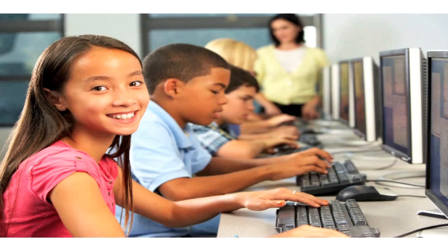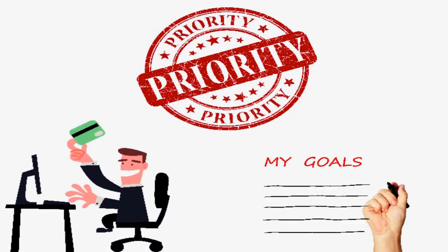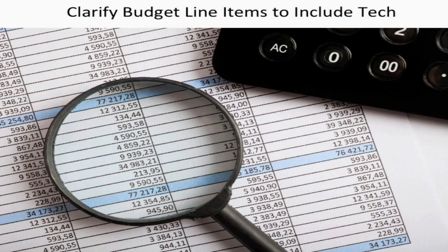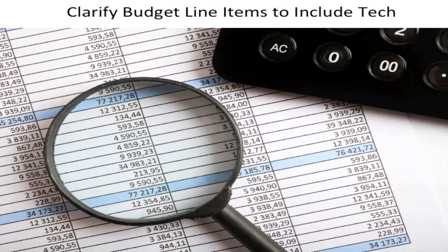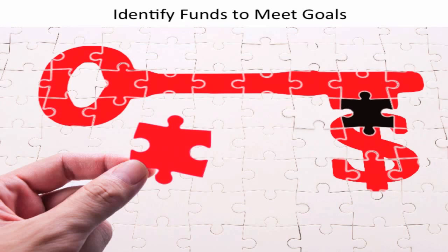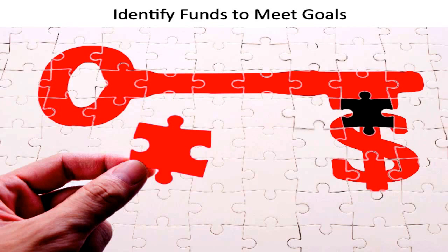In the previous video in this unit, we covered using a technology inventory to define technology needs and prioritize technology investments to meet short- and long-term instructional goals. Setting priorities and connecting technology purchases to defined goals builds a foundation for successful use and implementation. You want to clarify your school budget line items for technology, identify funds to help meet those short- and long-term goals, and consider alternative funding sources while planning for long-term maintenance and replacement costs to facilitate sustainability.